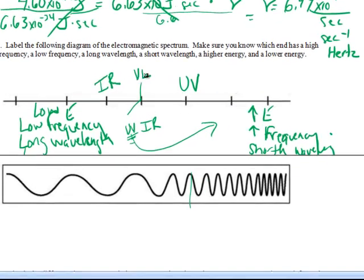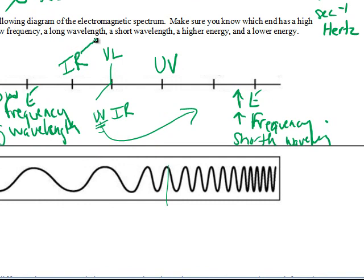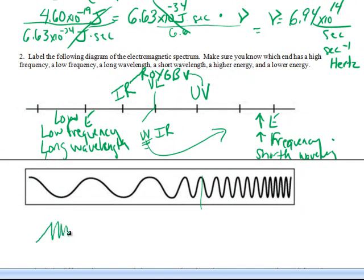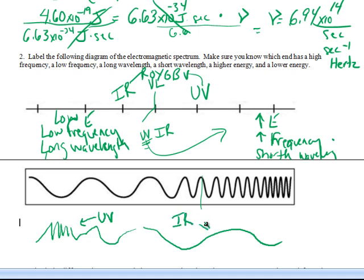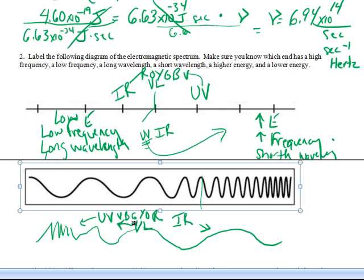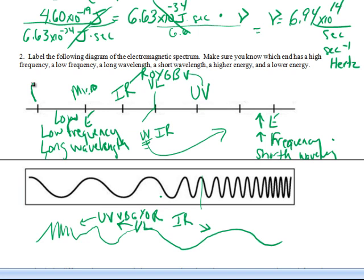The side that's more dangerous - that gives skin cancer - is ultraviolet, because it has more energy. So ultraviolet is on the shorter wavelength, higher energy side, and infrared is on the other side. Our visible light spectrum runs from red right after infrared: red, orange, yellow, green, blue, and then violet right next to ultraviolet. Make sure you know which way the spectrum is going, which side has high energy. After infrared, we have microwaves, and with the lowest energy, longest wavelength, and lowest frequency, we have radio waves.